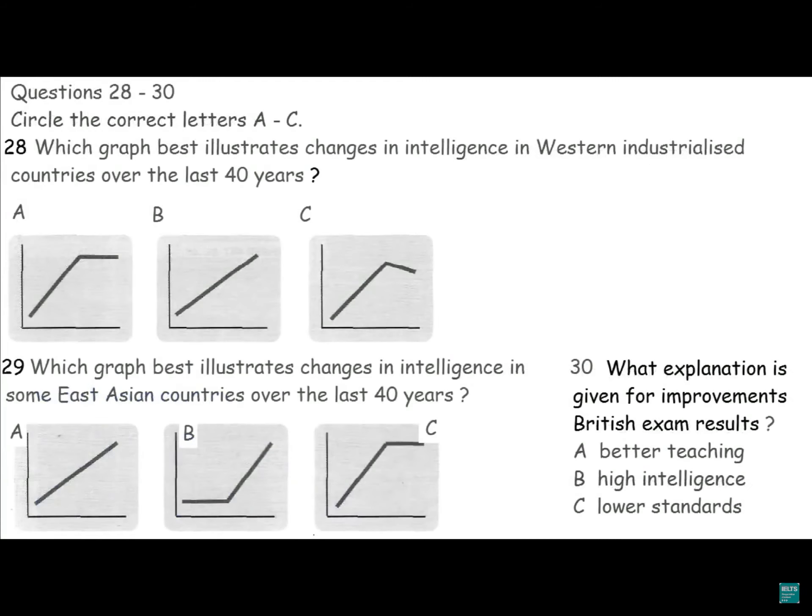You have some time to look at questions 26 to 30. Are there any limits to intelligence, or will the human race just continue to get cleverer and cleverer? Actually, research in some Western industrialised countries, such as Australia and some European countries, suggests that intelligence rose quite steeply for two or three decades, and then levelled off a few years ago. Some pessimists think that quite soon we may see it beginning to dip.